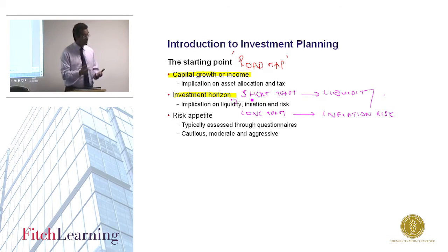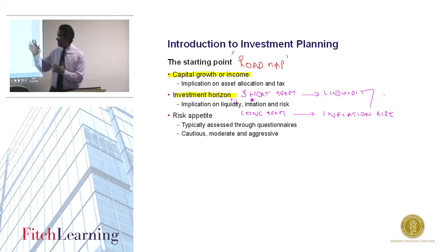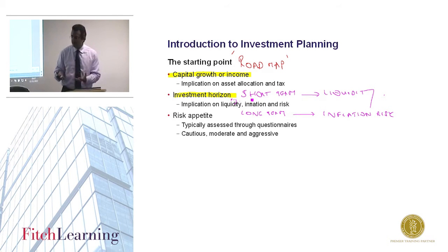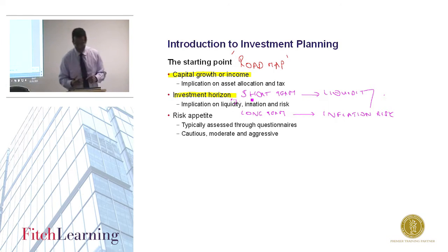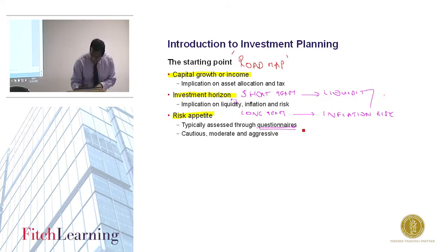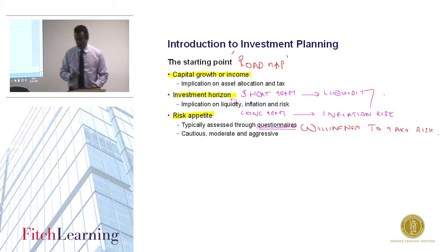Even if the investor is wealthy, has no dependents, and has the ability to take risk, we can't force them to take risk — we have to assess that. Equally, someone who is very aggressive and risk-seeking but has family dependents: we can't exactly advise them to take that path. We need to assess their personality using questionnaires to assess their willingness to take risk.